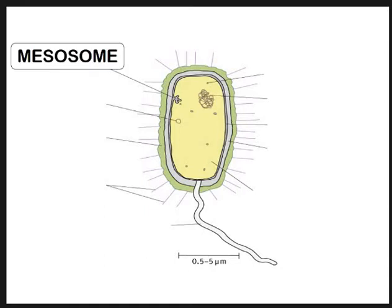Starting with the mesosome at the top - that's this little structure here, a folding of the inner membrane. This is where respiration occurs. From video one, remember that respiration is not breathing, because bacteria don't breathe. Respiration is the breakdown of sugar in the presence of oxygen to release energy. Some bacteria carry out aerobic and anaerobic respiration.